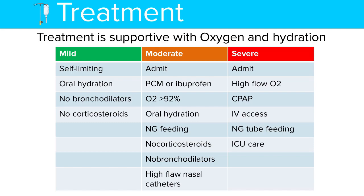In severe cases, the patient must be admitted and oxygen saturation maintained above 92% using a high-flow oxygen nasal catheter. Continuous positive airway pressure may also be needed. Secure intravenous access for administration of intravenous fluids, and use a nasogastric tube for feeding.